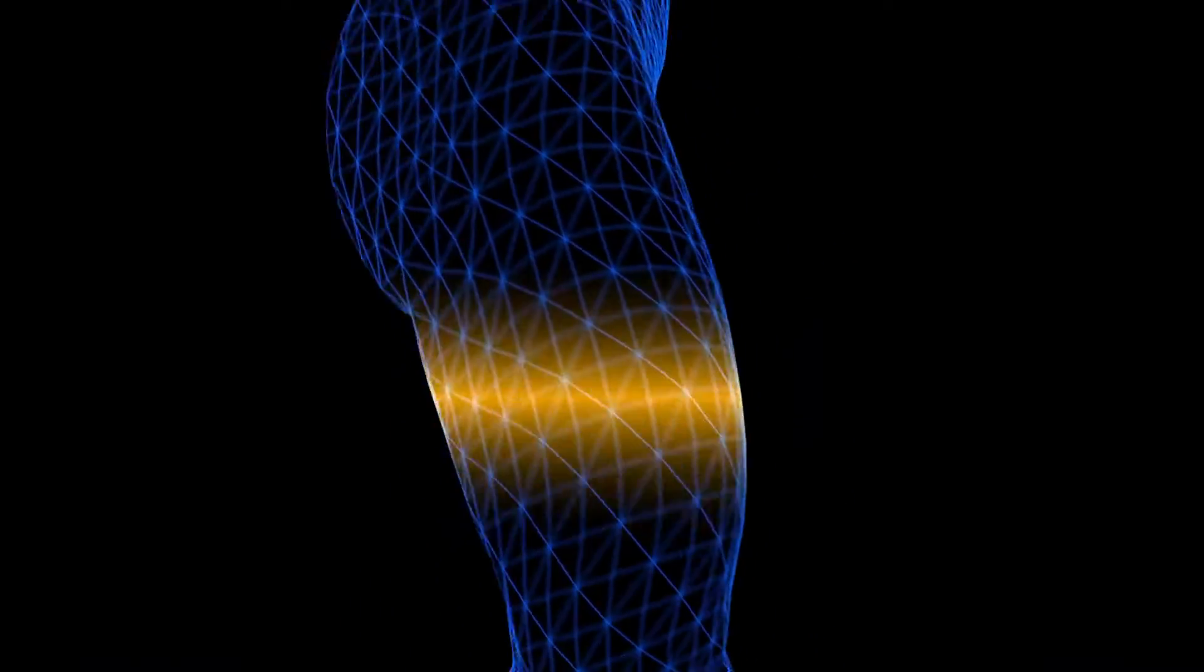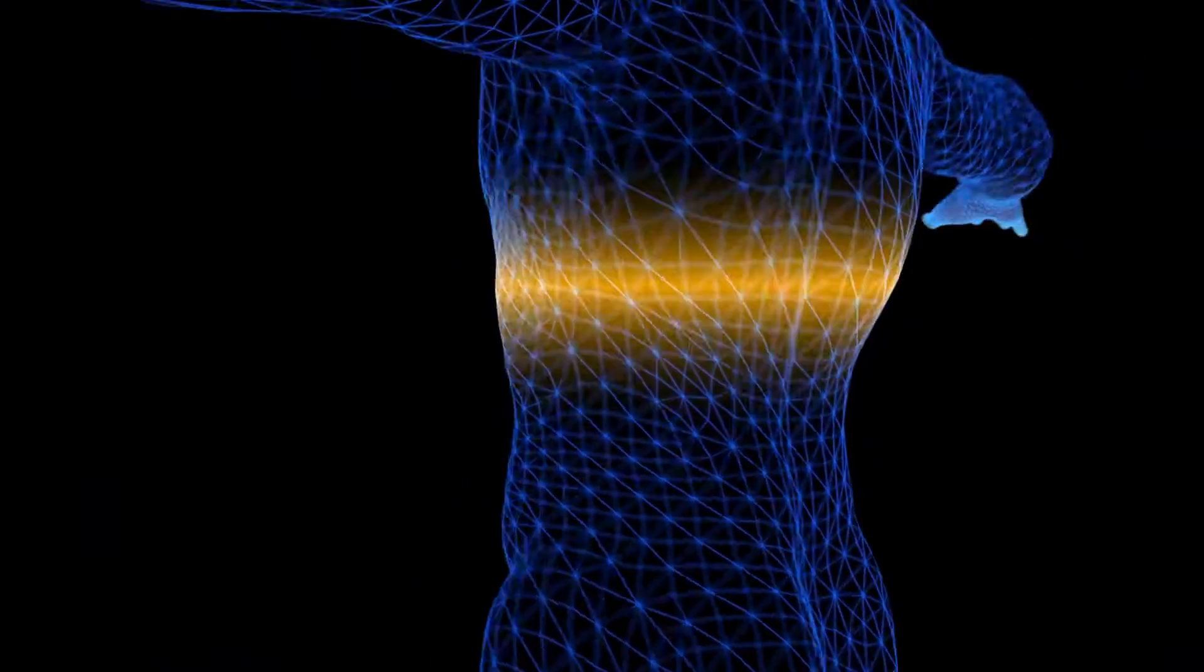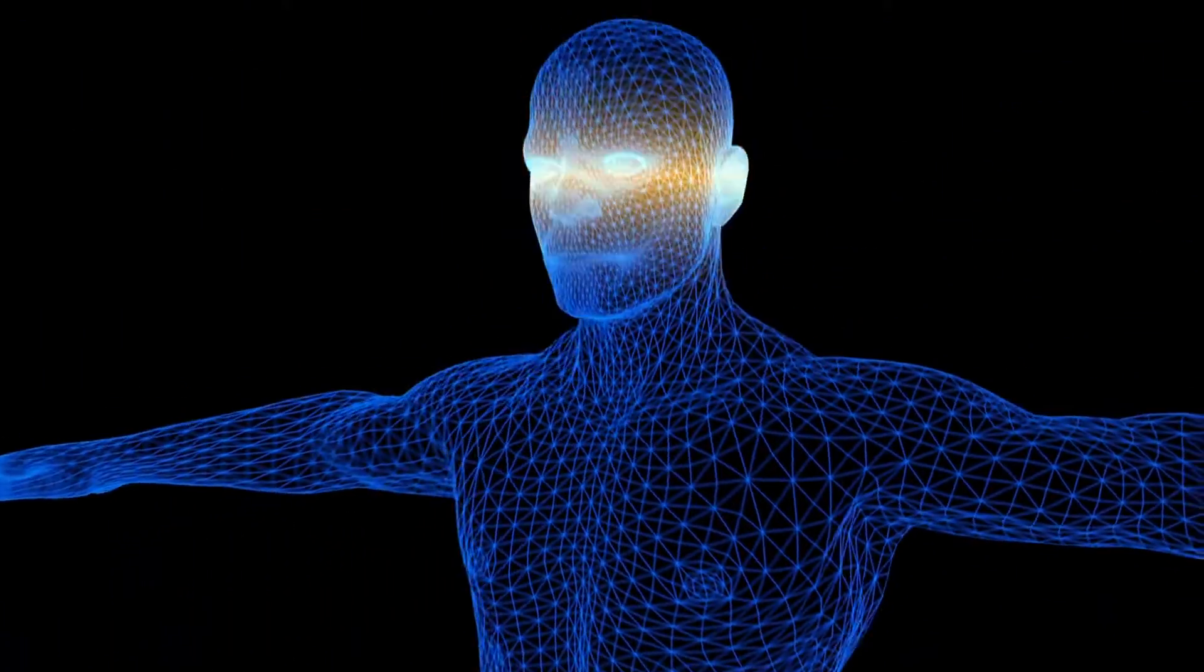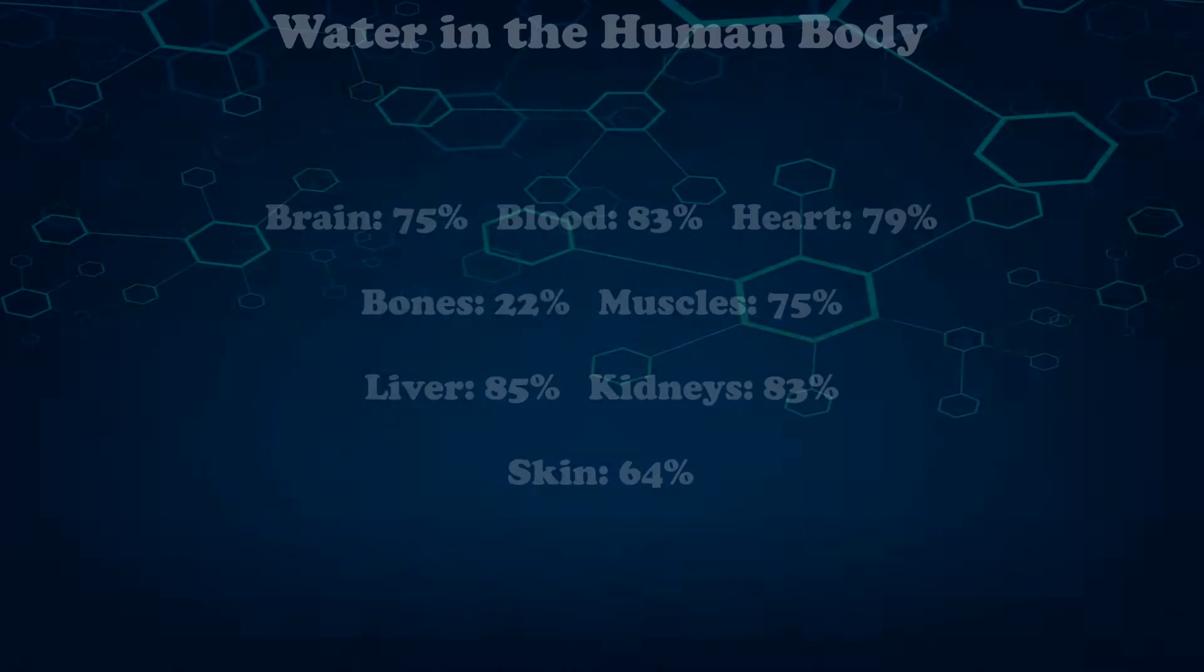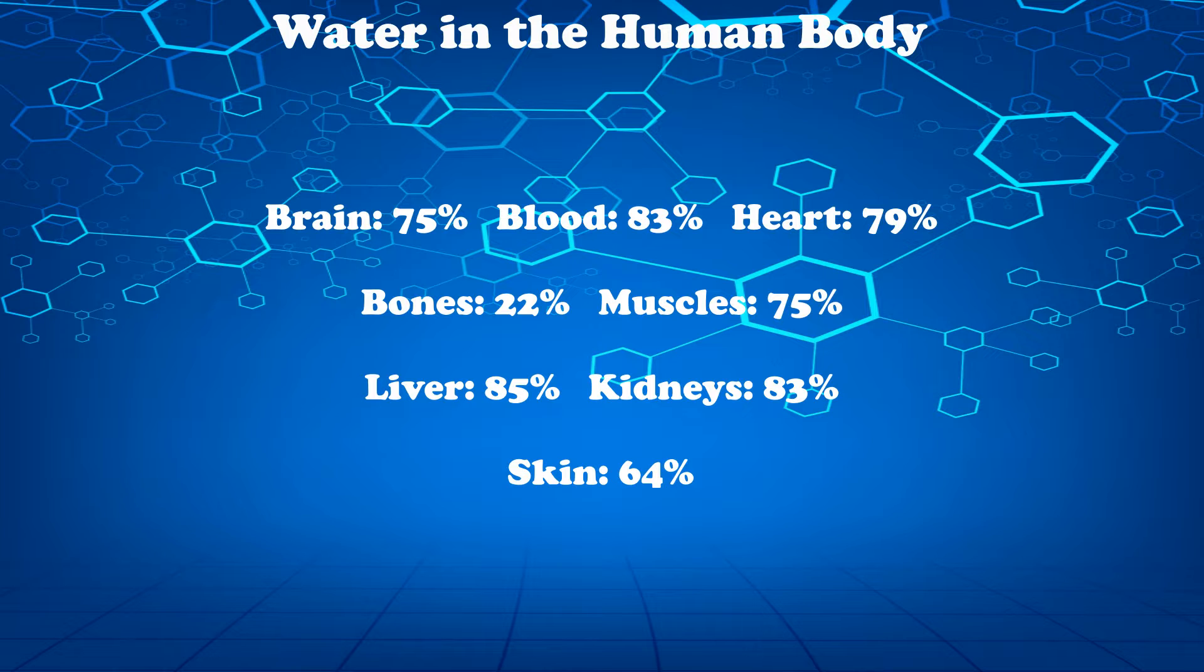For example, the brain is 75% water. Your blood is 83% water. Your skin contains 64% water and so on and so on, even all the way down to your bones which are made up of 22% water.